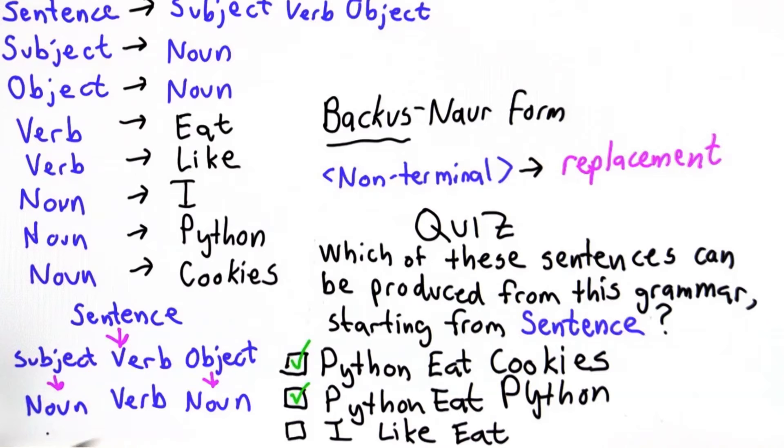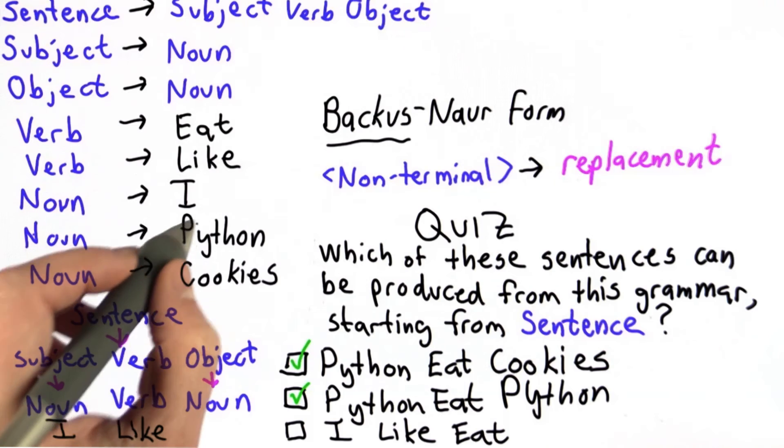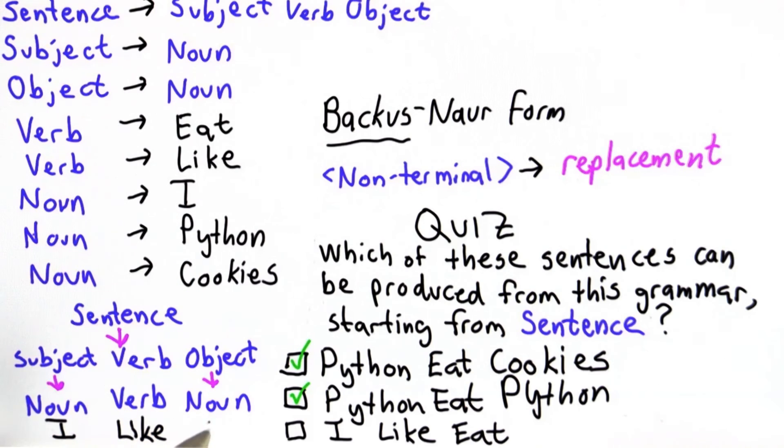There's no way to produce the third one. We can get close. We can turn the noun into I, following this rule. We can turn the verb into like, following this rule. We can't turn the noun into eat. The noun can be either I, Python, or cookies. So that's why we can't derive the third sentence.